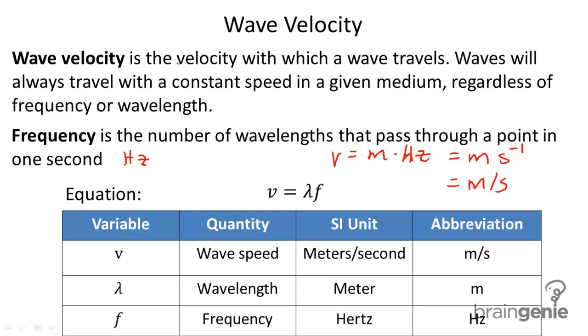Now remember, it says here that waves will always travel with a constant speed in a given medium. Therefore, frequency and wavelength do not affect the speed. Therefore, lambda is inversely proportional to frequency.